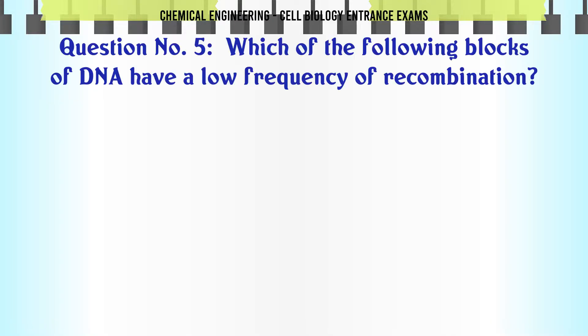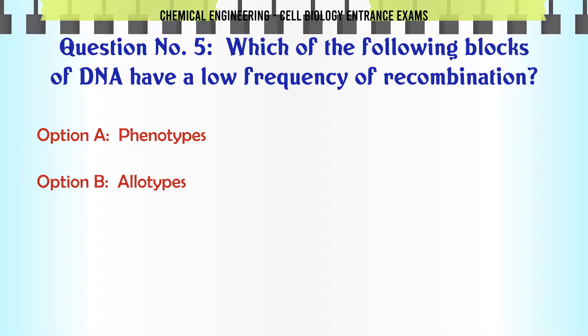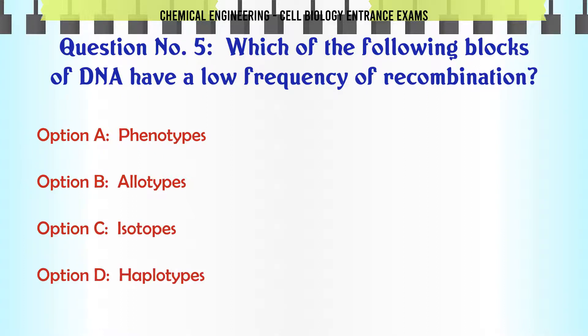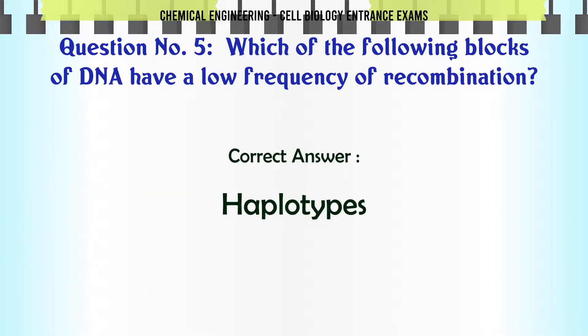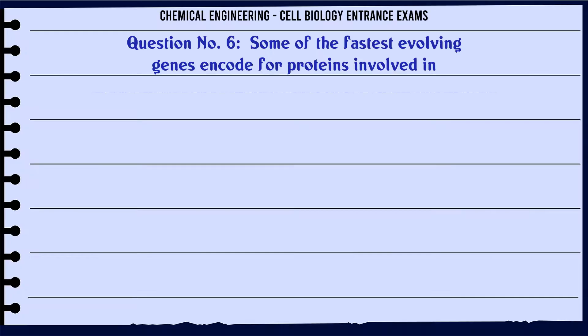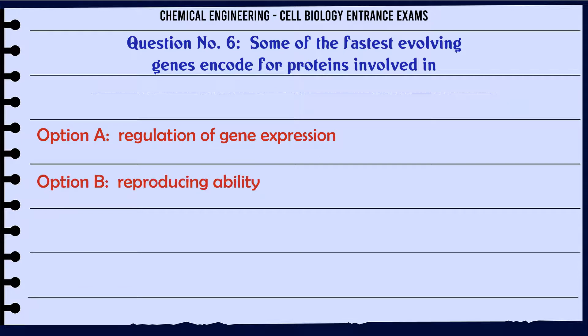Which of the following blocks of DNA have a low frequency of recombination? A. Phenotypes. B. Allotypes. C. Isotopes. D. Haplotypes. The correct answer is Haplotypes.